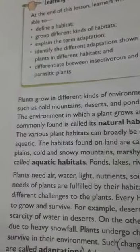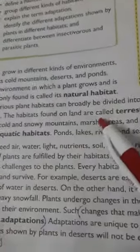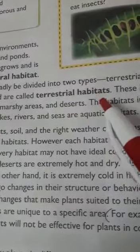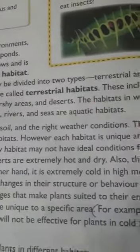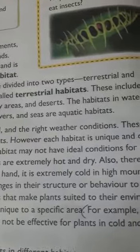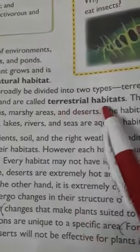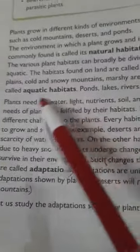This completes our lesson. Here is a summary: A habitat is the place where plants naturally grow, called the natural habitat. Natural habitats are divided into two types — terrestrial habitat, where plants grow on land in plains, deserts, and mountains, and aquatic habitat, where plants grow in water.